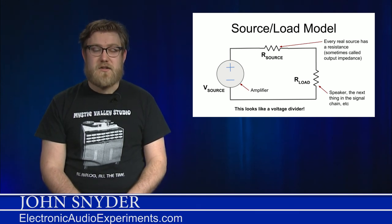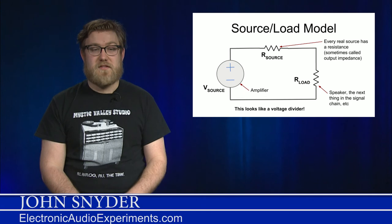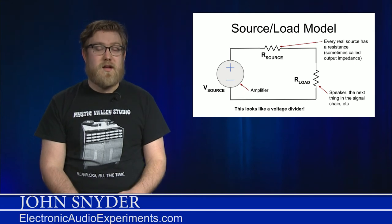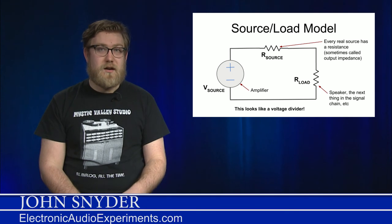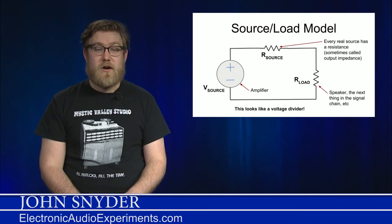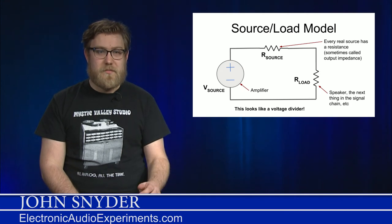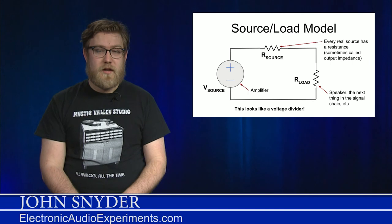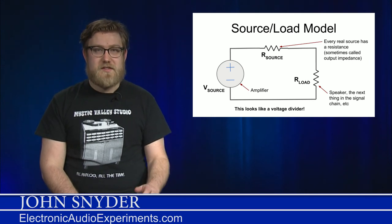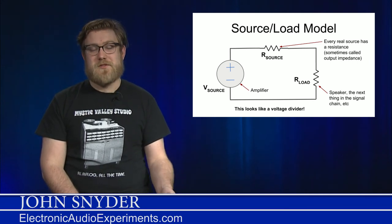For the case of the amplifier, you typically want our source and our load to be the same. This will give you what we call maximum power transfer. In something like a guitar being connected to an amplifier, you want our load to be much higher. Because as we saw before with the voltage divider example, if those two values are close to one another, you'll get a loss of signal.